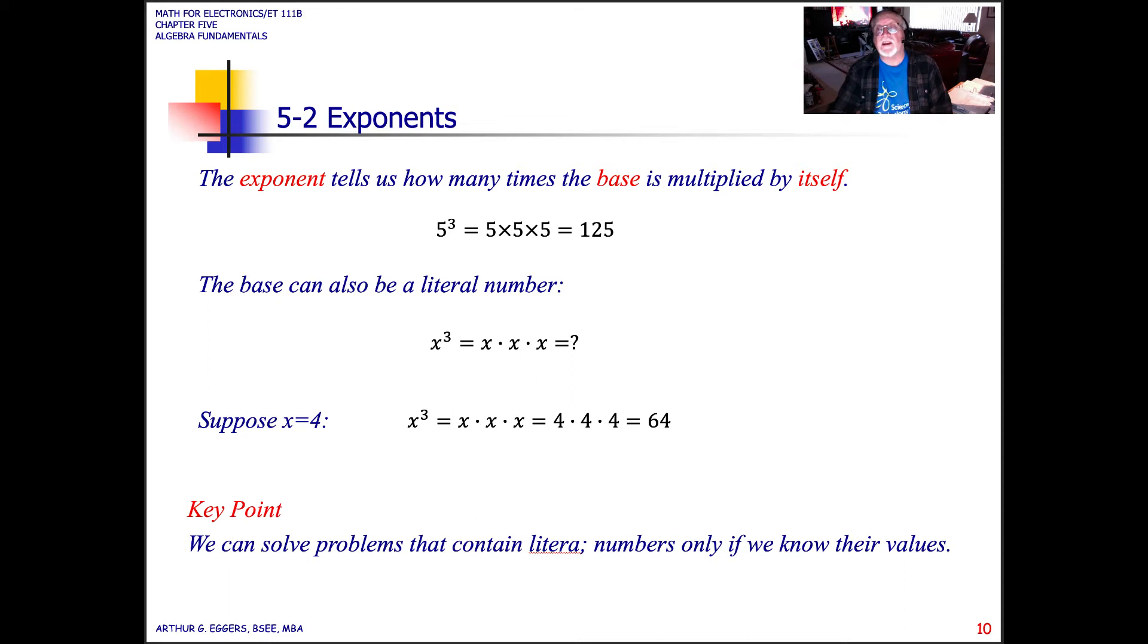Now dealing with exponents. We've seen in previous sections how we can add, subtract, multiply, and divide values that are exponents. The exponent tells us how many times the base is multiplied by itself. In the past, we've used base 10, and we've seen how that plays into the metric system and engineering notation. But you can see here, we can apply it to any value. We have 5 cubed, which relates to a product of three 5s, which equals 125. We can do the same with a literal, where we have x cubed. If x equals 4, that becomes 4 cubed, or 64.